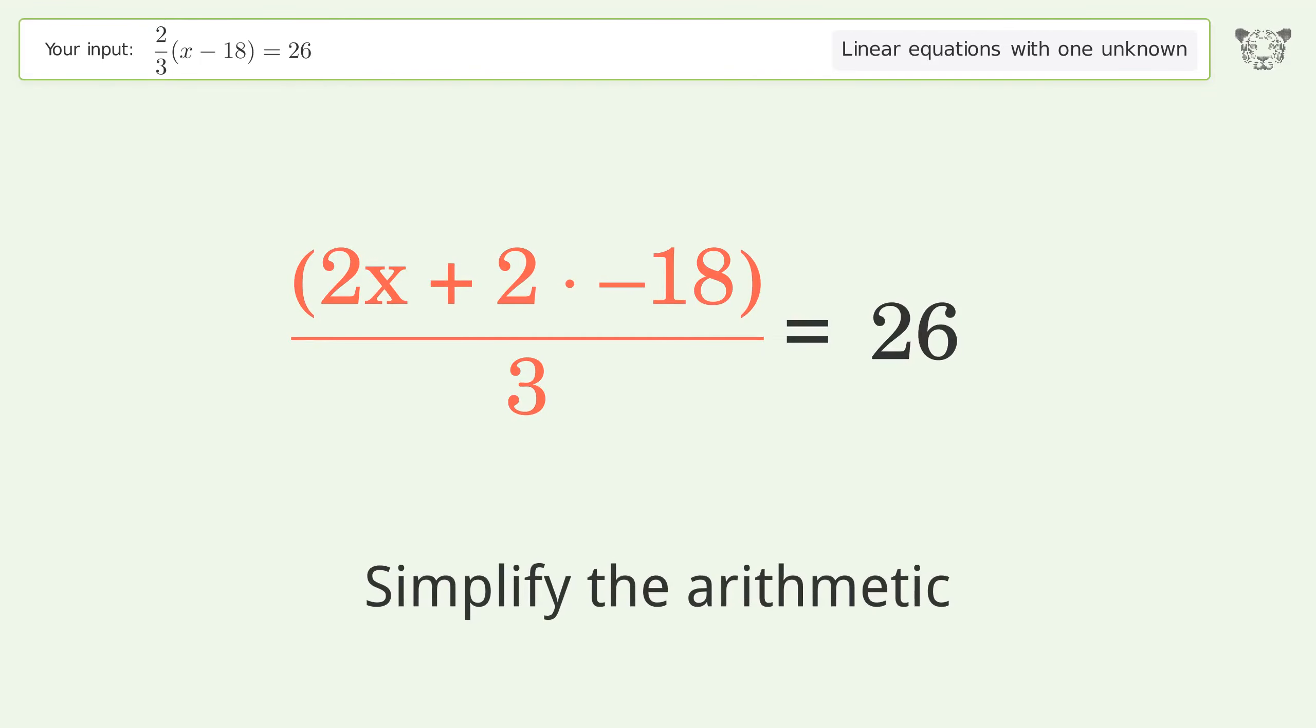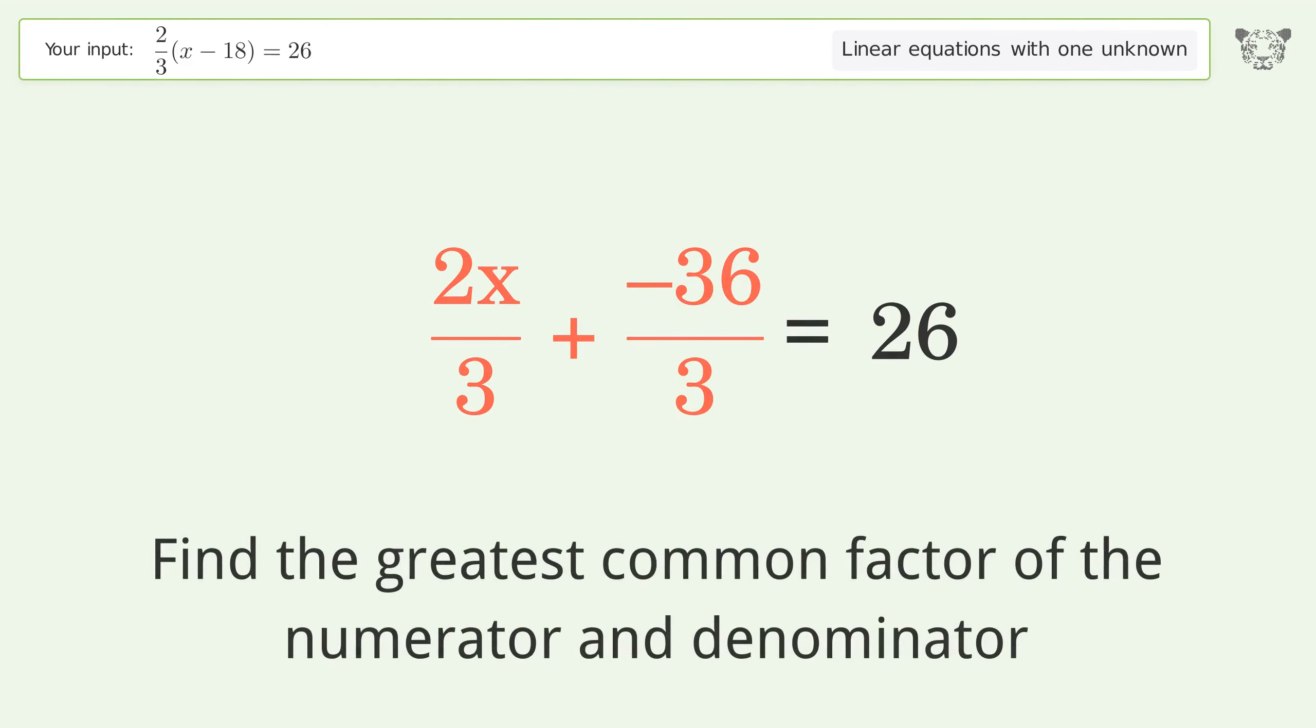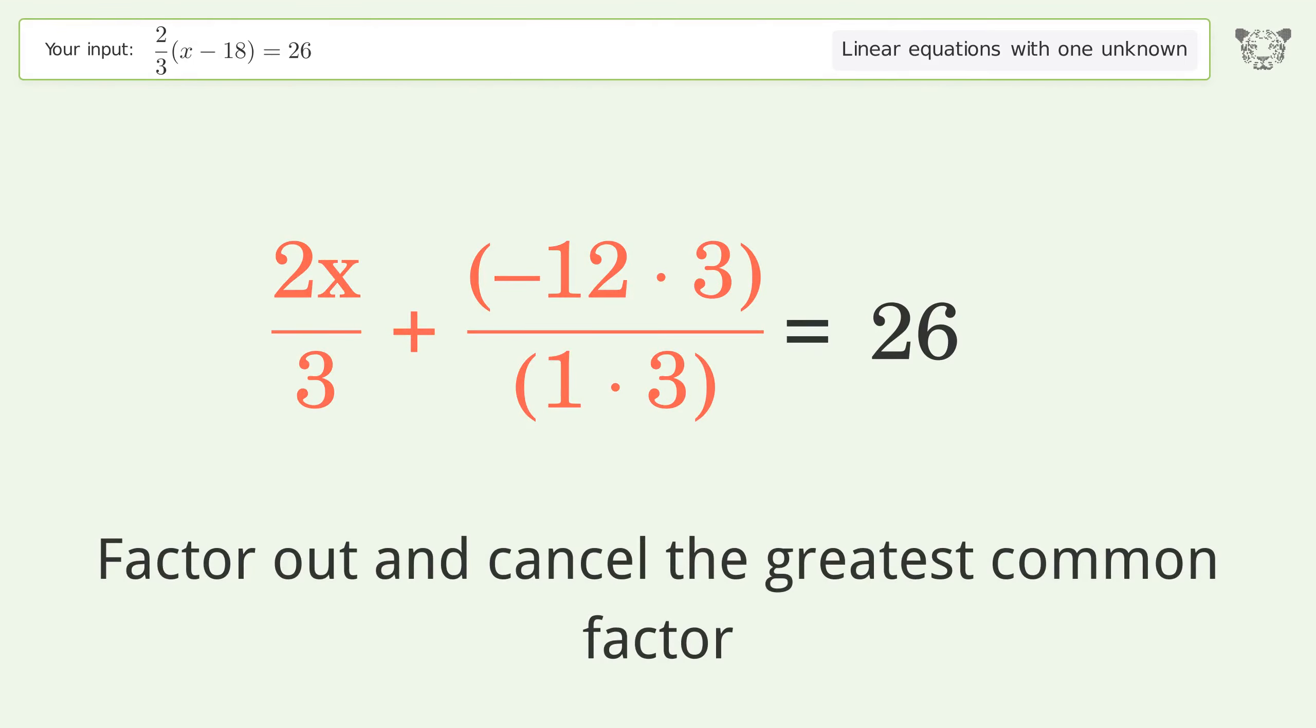Simplify the arithmetic. Break up the fraction. Find the greatest common factor of the numerator and denominator. Factor out and cancel the greatest common factor.